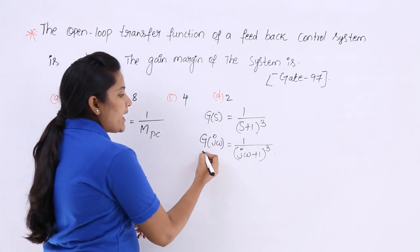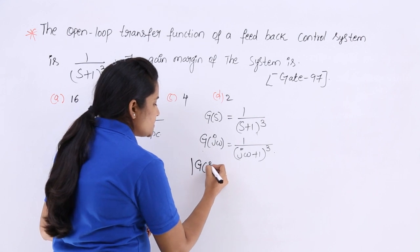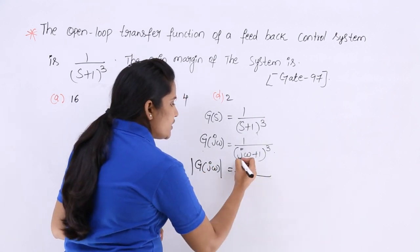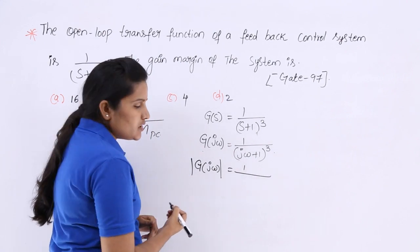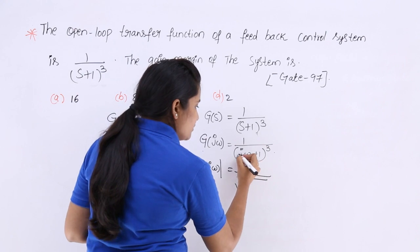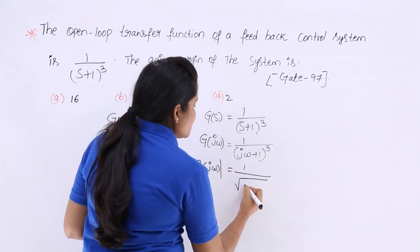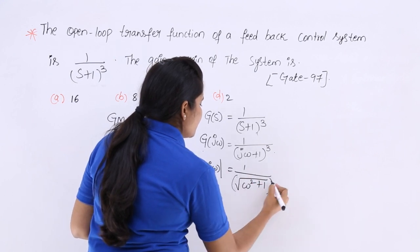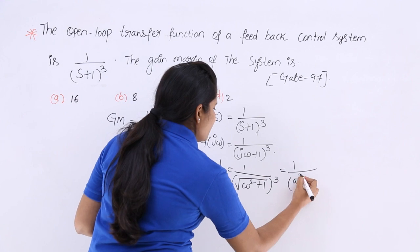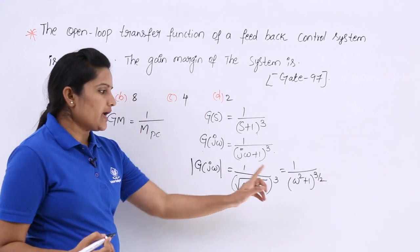If you want the magnitude of this transfer function, you need to consider the modulus of G(jω). The modulus of 1 is 1. For the denominator factor, you take the modulus, which gives root of (ω²+1) whole cube. So this can be written as (ω²+1) whole power 3/2. This is your magnitude.